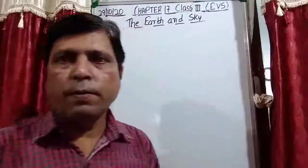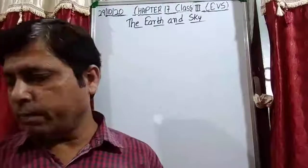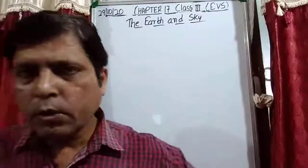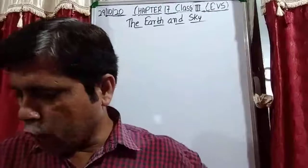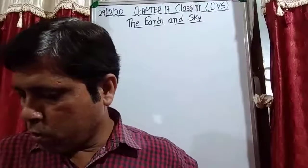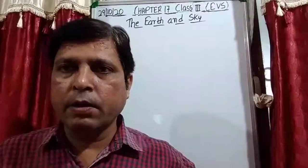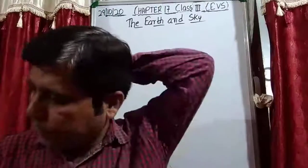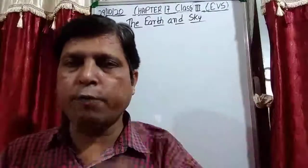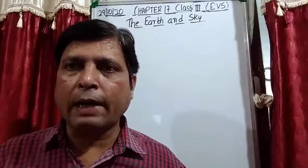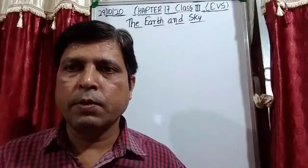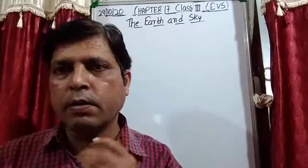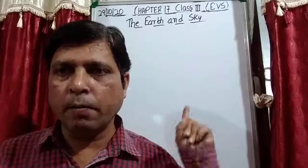So, chapter number 17, The Earth and Sky. Take out your book and open page number 90. Also take one rough copy so that you can note down the important points from the board.